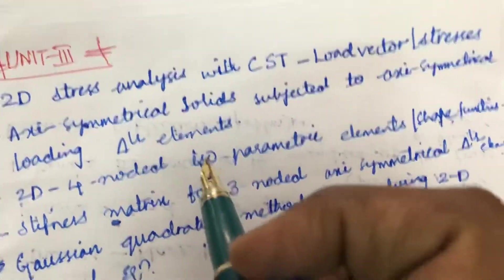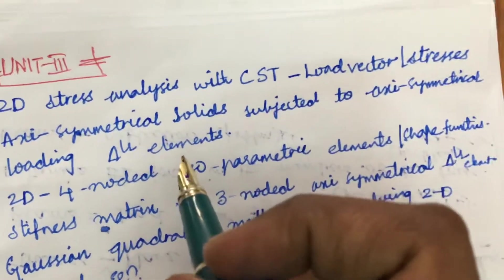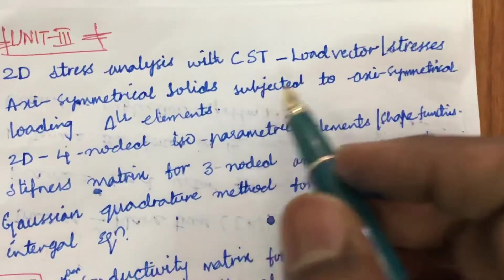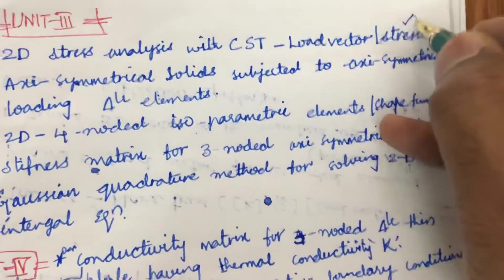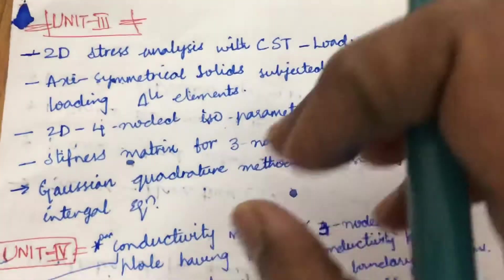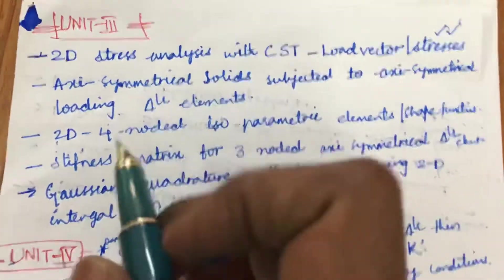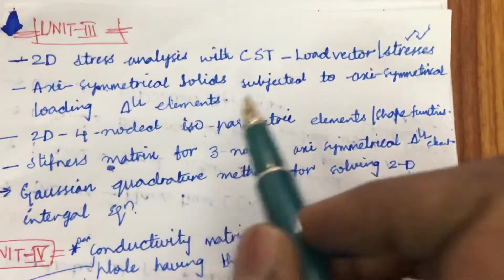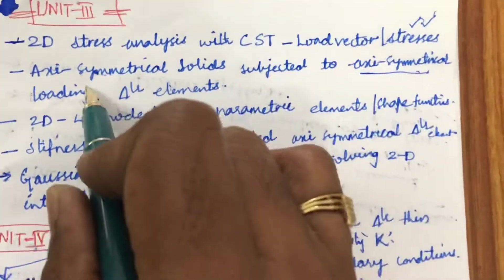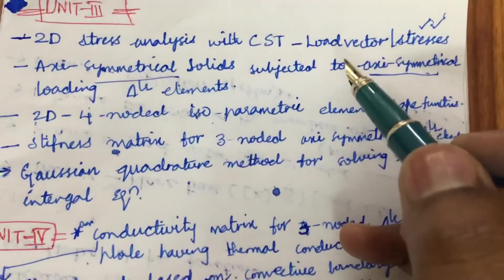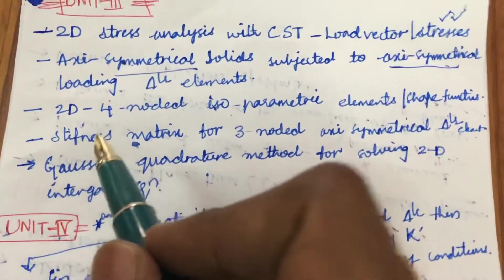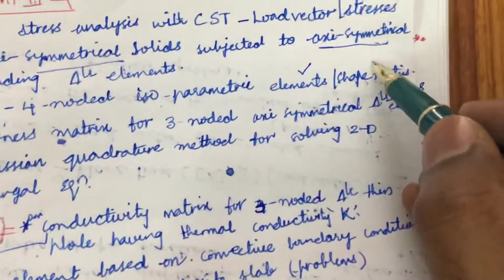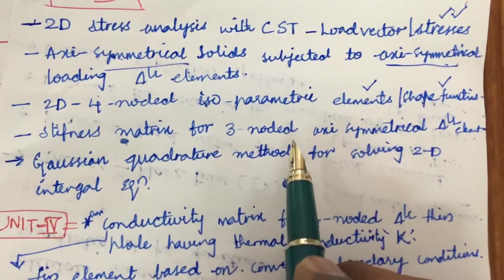Later, Unit 3 is all about the constant strain triangles. It is all about the 2D stress analysis with CST, load vector and stresses, derivation or problem. We can expect even two questions from Unit 3. Later, axis-symmetrical solids subjected to axis-symmetrical loading triangular element is one of the sure questions related to axis-symmetrical solids, and the problem related to it. And 2D four-nodded isoparametric elements is also important.